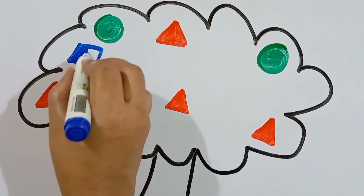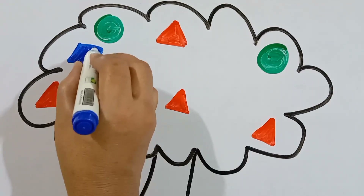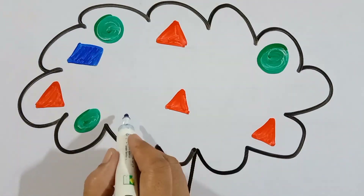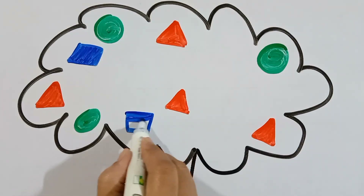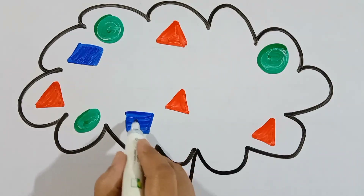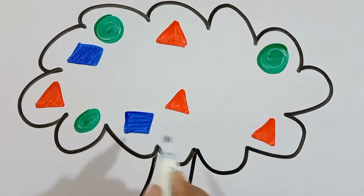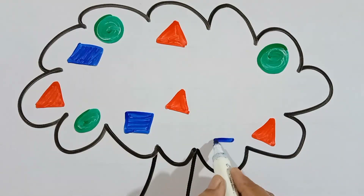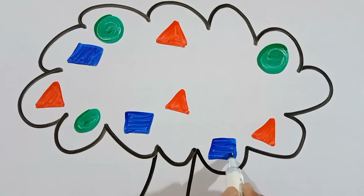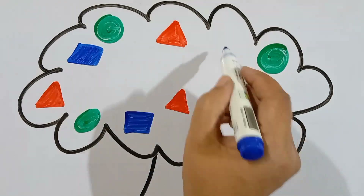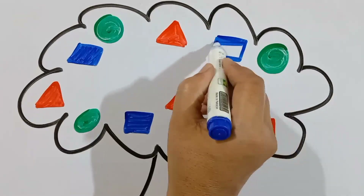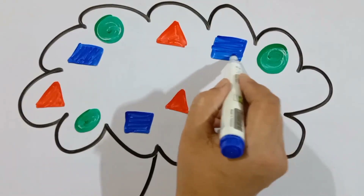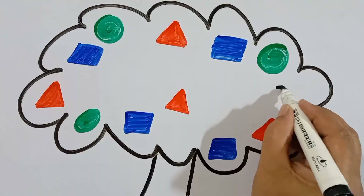A, B, C, D, E, F, G, H, I, J, K, L, M, N, O, P, Q, R, S, T, U, V, W, X, Y, Z. Now I know my ABCs, next time won't you sing with me.